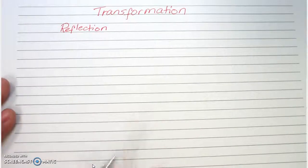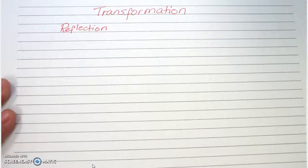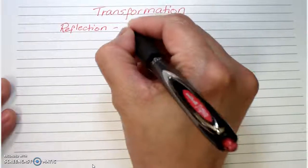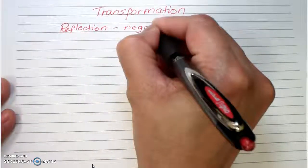Today we're going to discuss transformations. The first type of transformation I would like to discuss is the reflection. Reflection happens when there is a negative sign in front of the function.